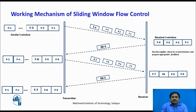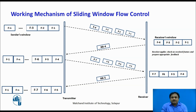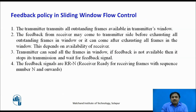After some time, the frames arrive at the receiver side. The receiver applies an error check and plans the feedback. In the figure, the receiver checks frames F1, F2, and F3, and gives feedback as RR4 — acknowledging all three frames and indicating it is waiting for frame 4 onwards. In this method, even if frame 4 was received correctly, the sender must start its next phase of transmission from frame number 4, meaning frame 4 is discarded by the receiver. This is the policy used in sliding window flow control.